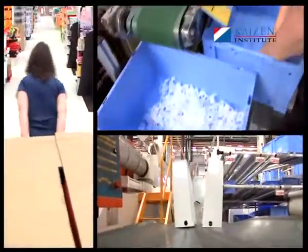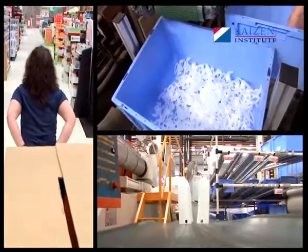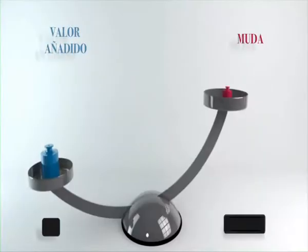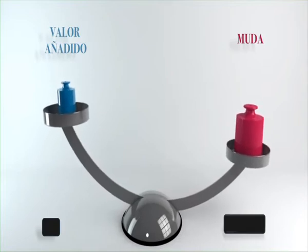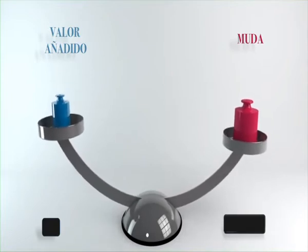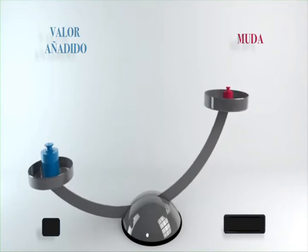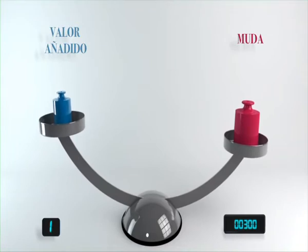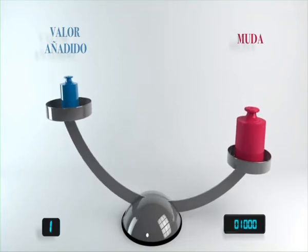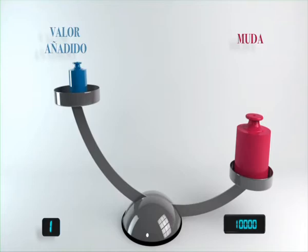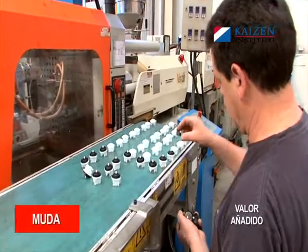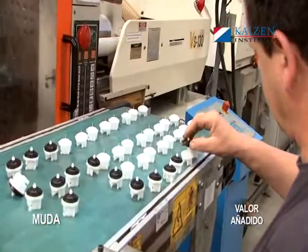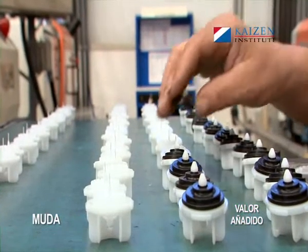¿Se hace una idea de cuánto muda hay en su empresa? Las mejores empresas a nivel mundial presentan ratios de muda frente a valor añadido que van desde 1 para 200 a 1 para 300. En una empresa normal, este ratio puede variar desde 1 para 1.000 hasta 1 para 10.000. Vamos a observar las siguientes operaciones, donde podemos ver claramente la parte del proceso que representa desperdicio.